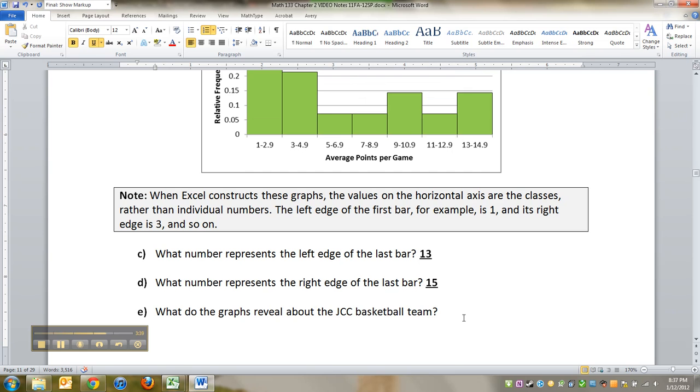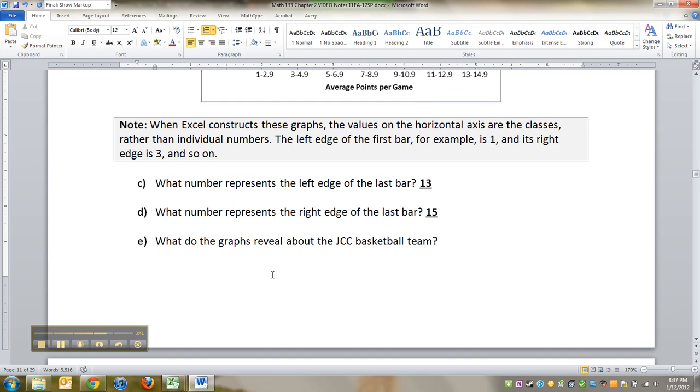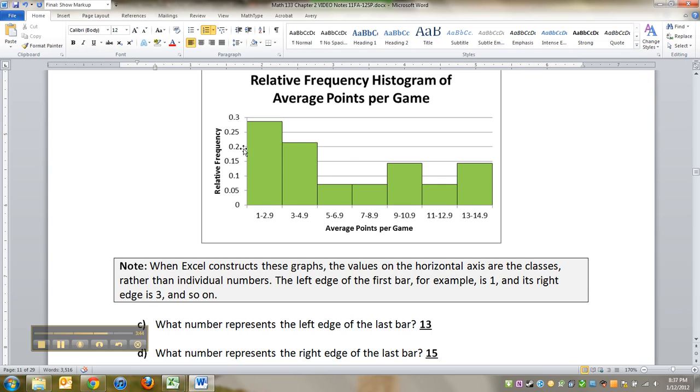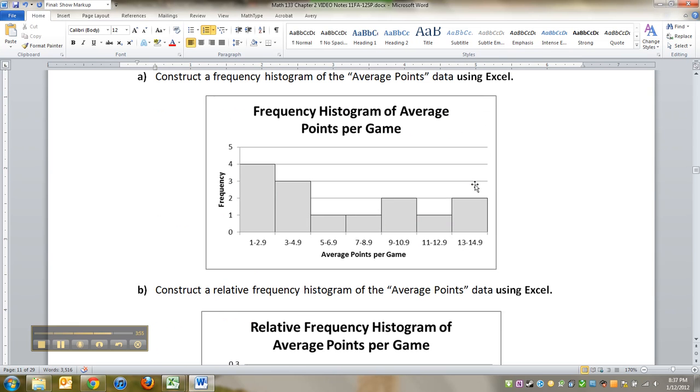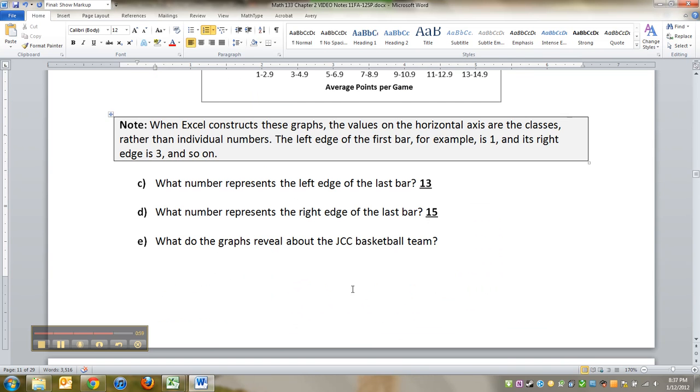All right. What do the graphs reveal about the JCC basketball team? Well, at this point, most scorers are scoring in the 1 to 4.999 range, right? And we have a couple of people that are scoring way high. Matter of fact, you can see it over here. Two people are scoring in the 13 to 14.9, so there are two players averaging 13 to 14.9 points per game.